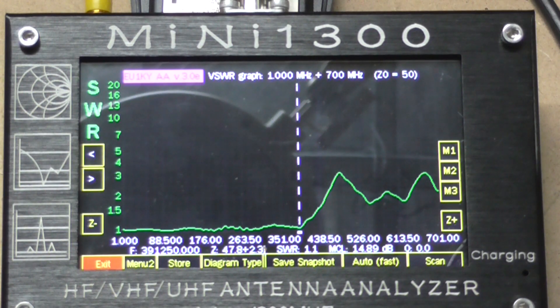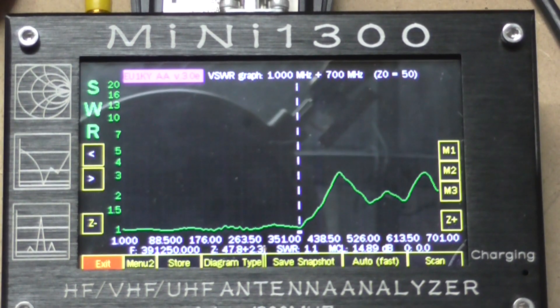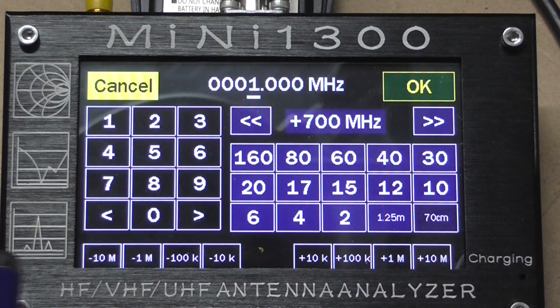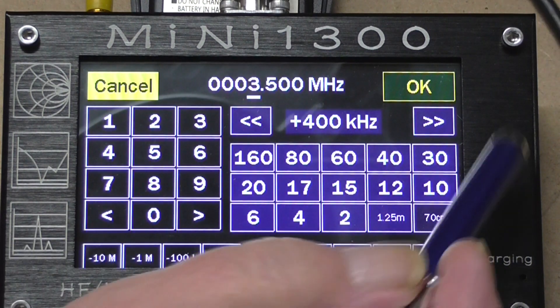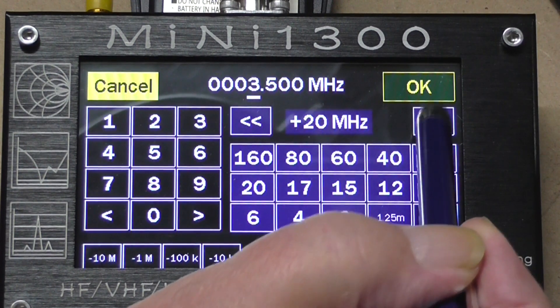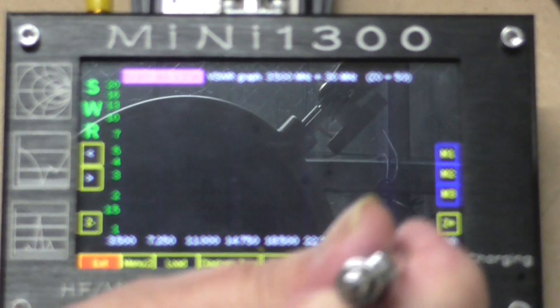All right, let's just change our parameters. We'll sweep from, let's use ham frequencies - we'll go from 3.5 megs up to 30 megs, so 80 meters through to 10 meters. We'll select 80 meters to 10 meters and scan it.